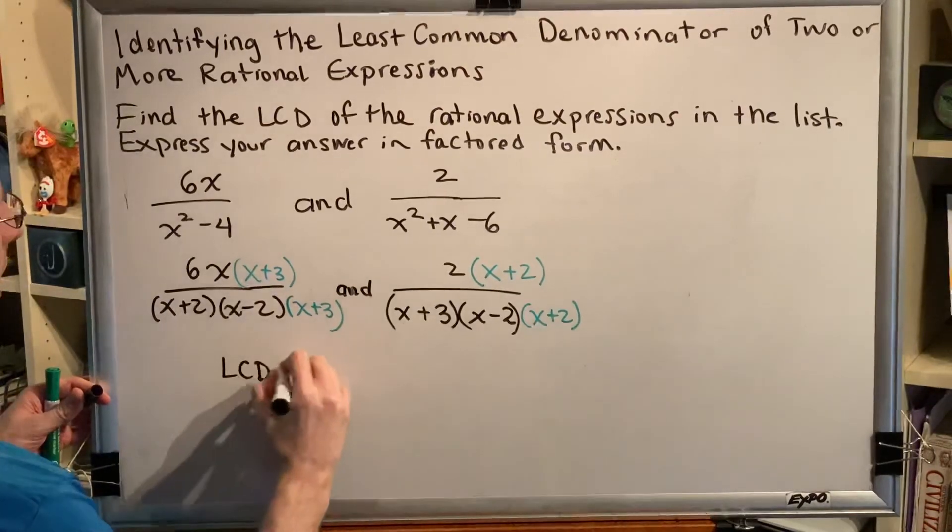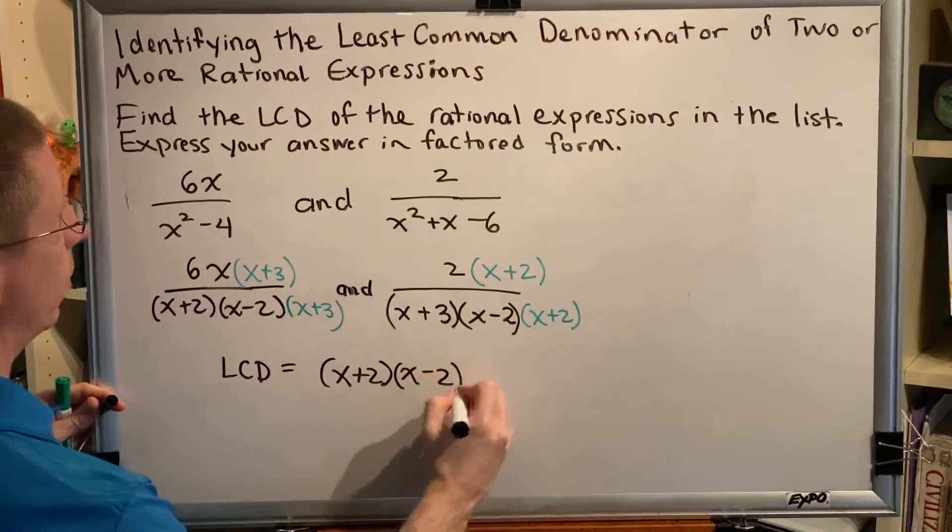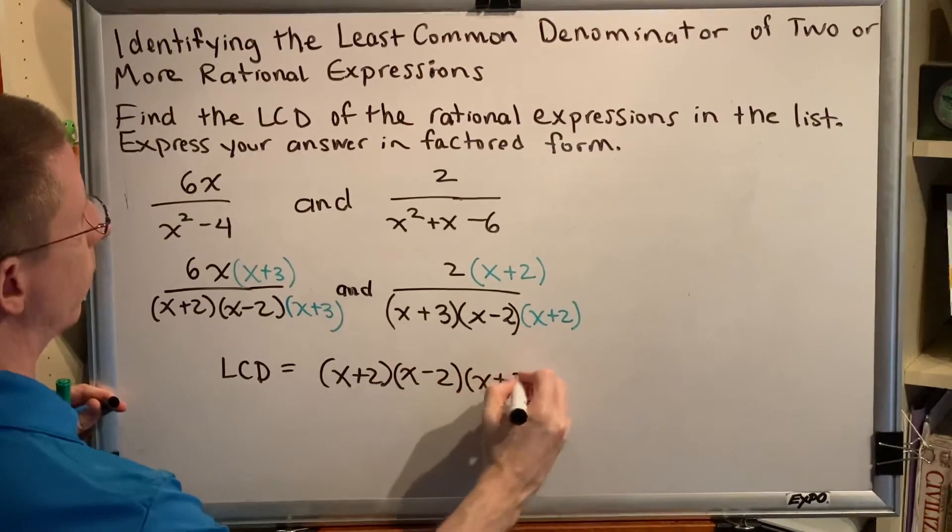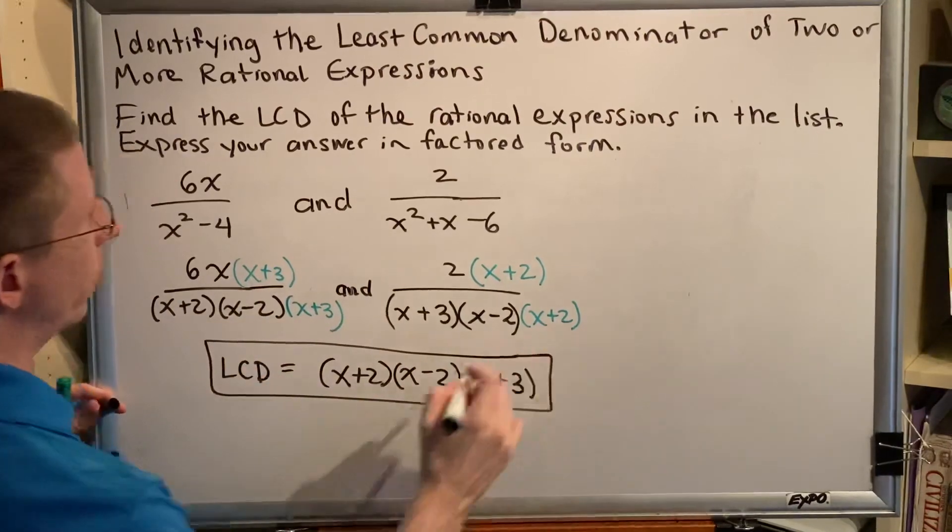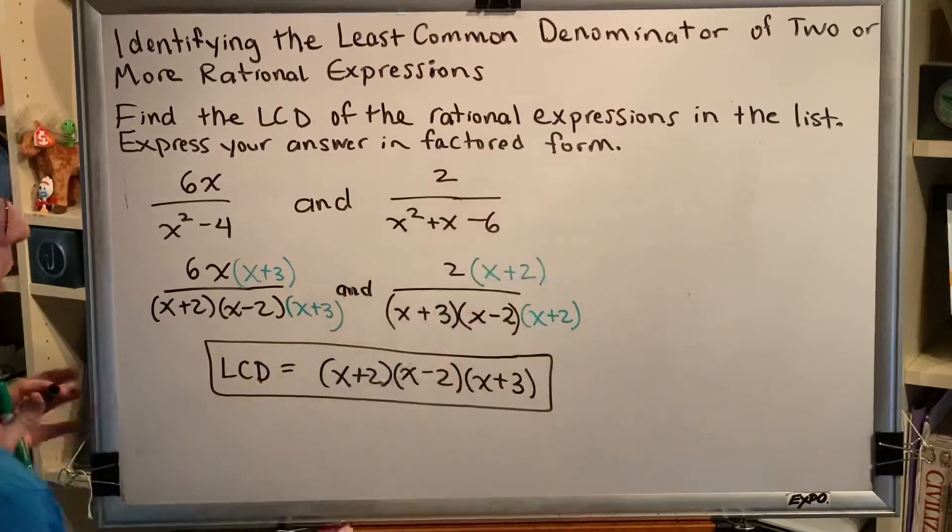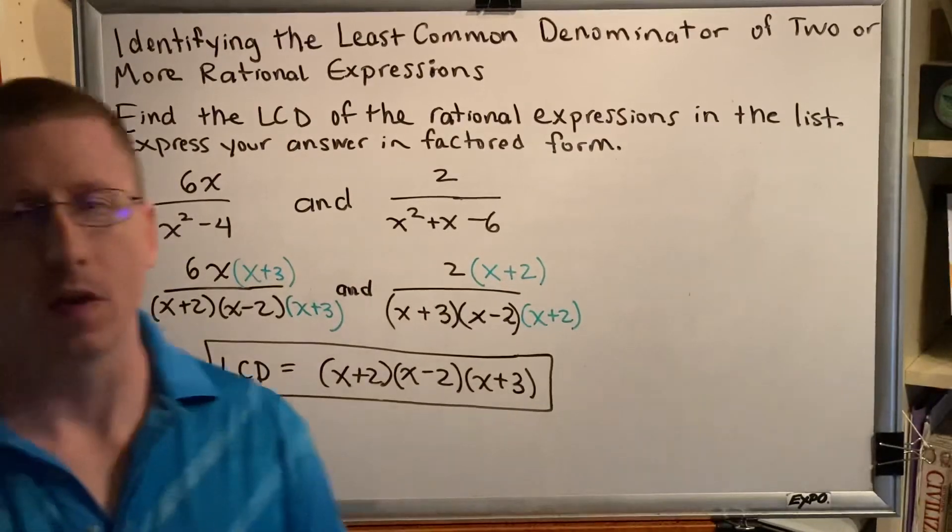So the least common denominator is x plus 2, x minus 2, x plus 3. This answer is in factored form. We've left each one of the factors in our answers. And that is the end of this problem.